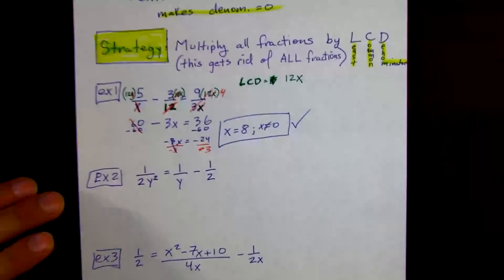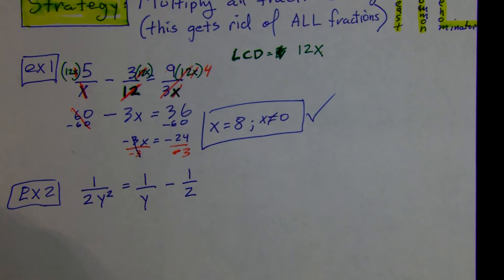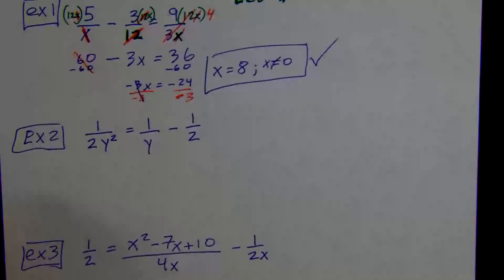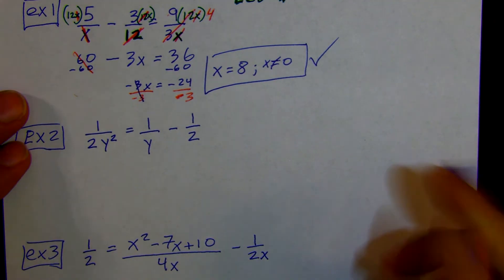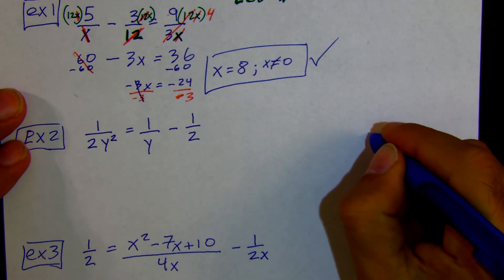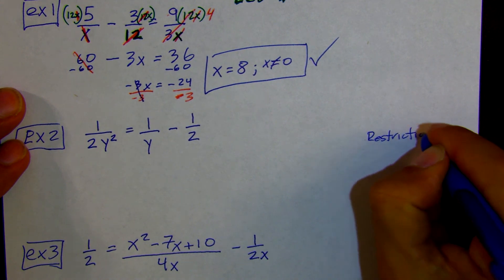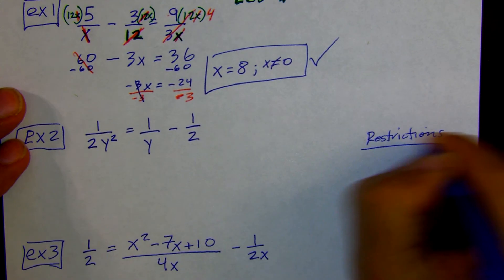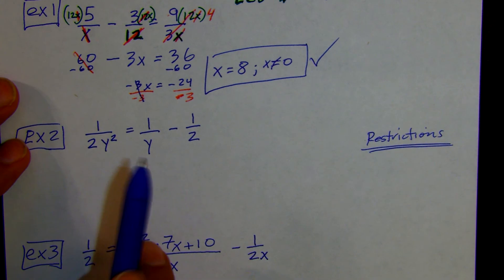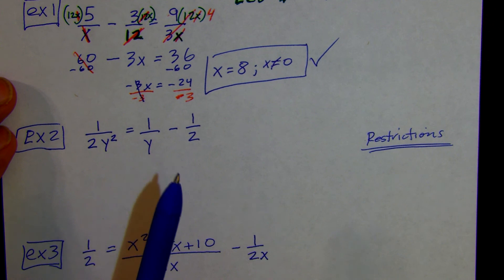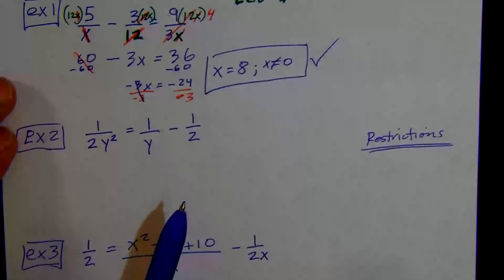I'm going to do a better job at this one, getting the restrictions right off the bat. Let's state the restrictions right away. What values for y will make us have a 0 in the denominator? y cannot equal what? Tell me in the chat.